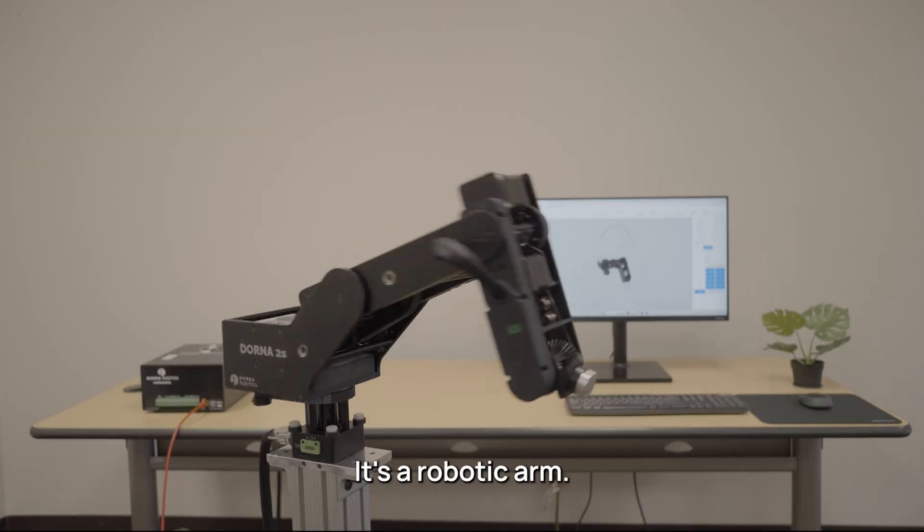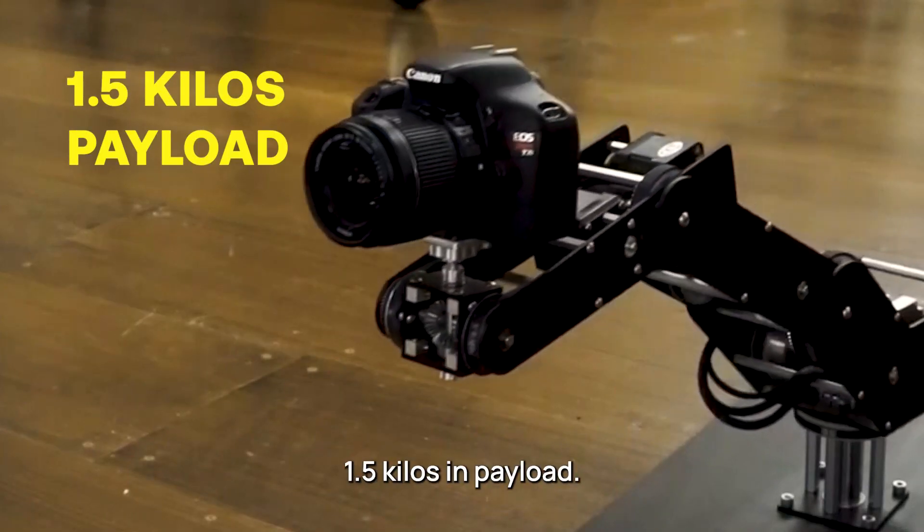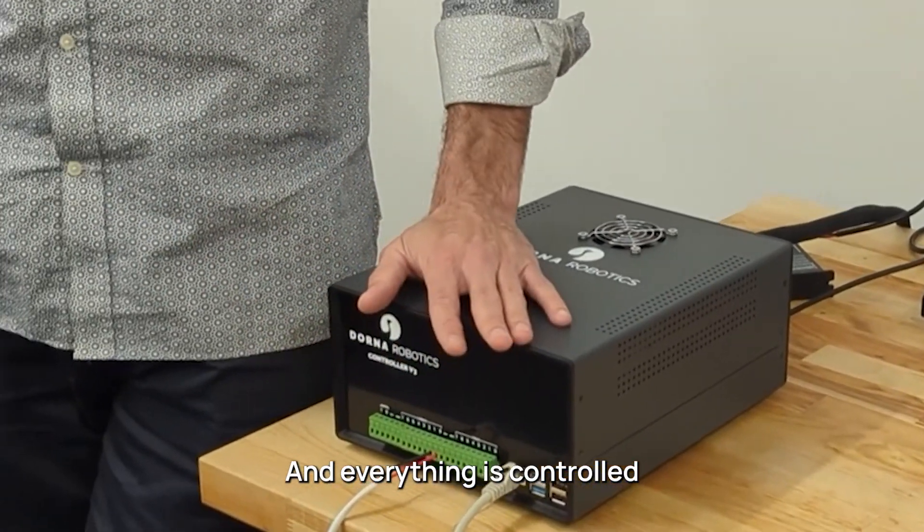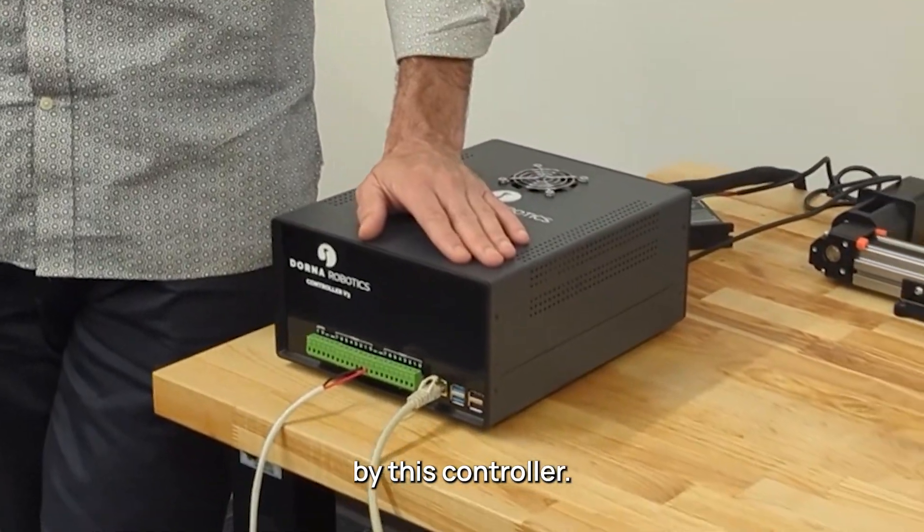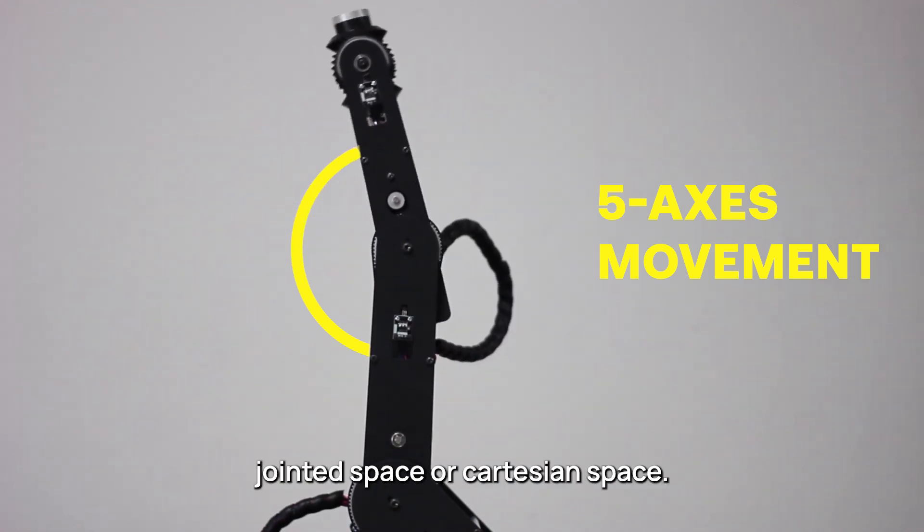So this is Doerna. It's a robotic arm. It can handle up to 1.5 kg per unit and everything is controlled by this controller. The robot has five axes. It can handle things in a 3D space.